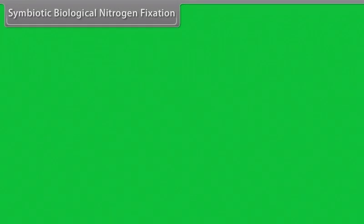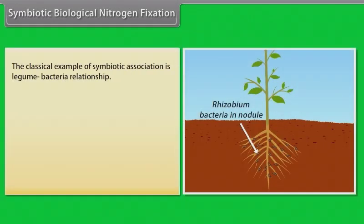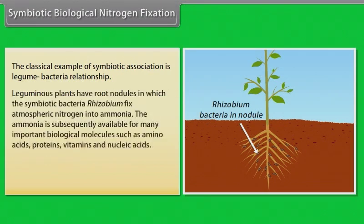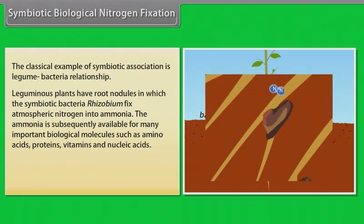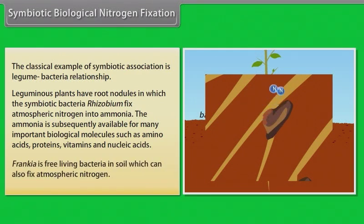Symbiotic biological nitrogen fixation: the classical example of symbiotic association is the legume-bacteria relationship. Leguminous plants have root nodules in which the symbiotic bacteria Rhizobium fix atmospheric nitrogen into ammonia. The ammonia is subsequently available for many important biological molecules such as amino acids, proteins, vitamins and nucleic acids. Frankia is a free-living bacteria in soil which can also fix atmospheric nitrogen.